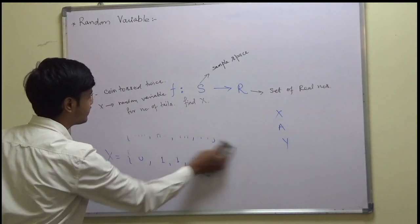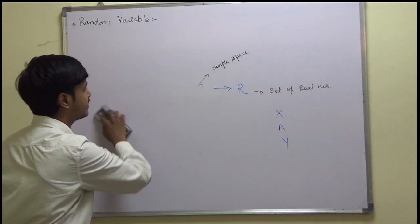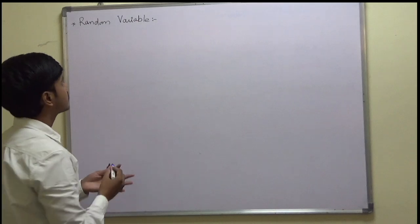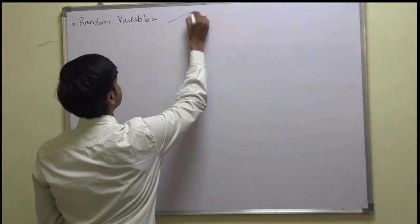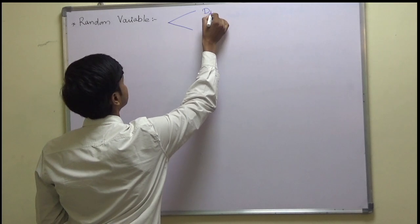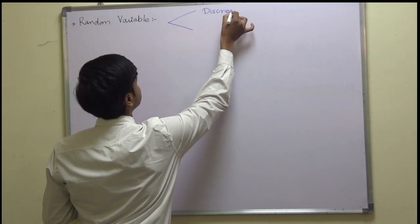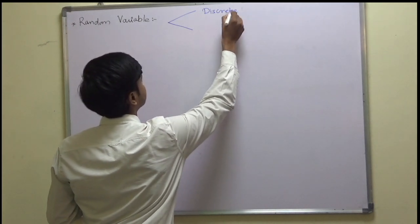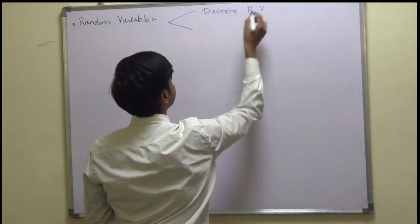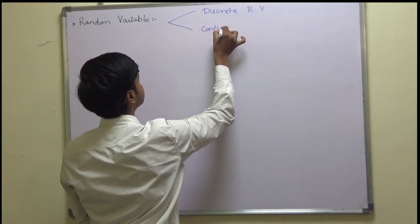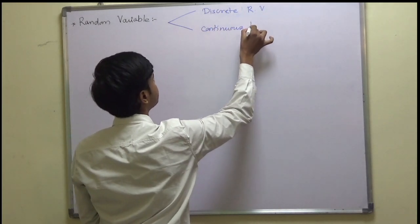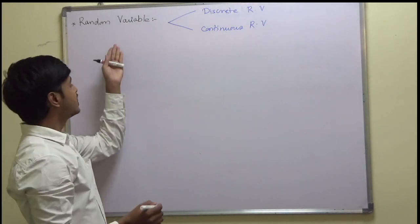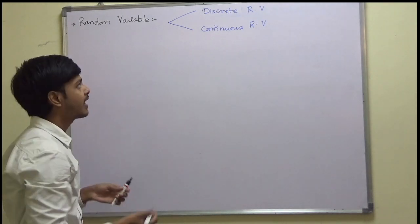Now let me go ahead and tell you the types of random variables. The random variable is of two types: one is the discrete random variable, and the other is the continuous random variable.